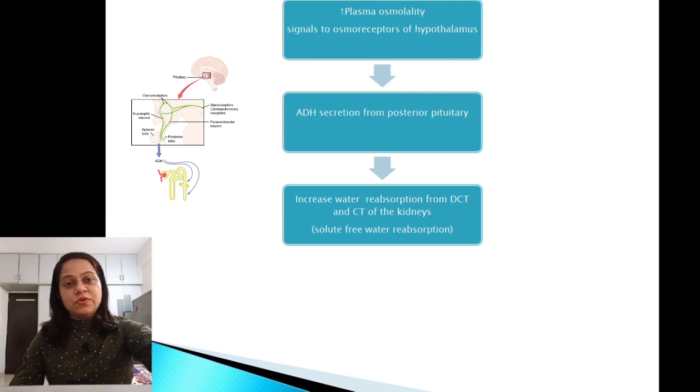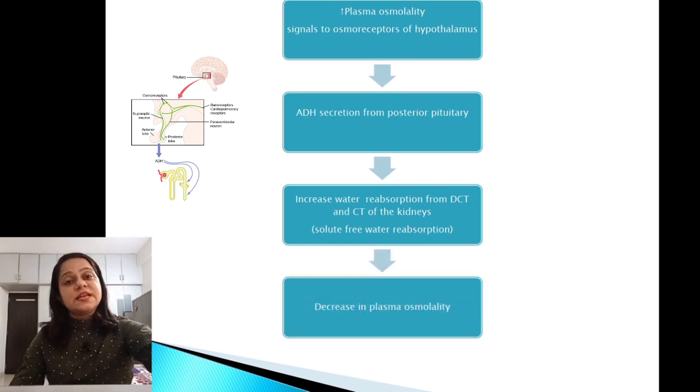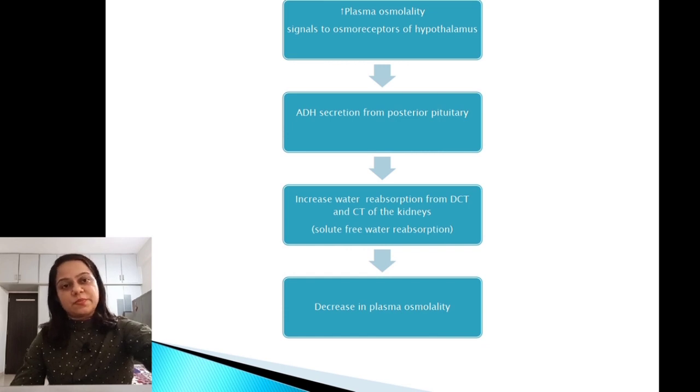Anti-diuretic hormone acts on the kidney. It causes increased water reabsorption from distal convoluted tubules and collecting tubules. This is solute-free water reabsorption, thus it reduces plasma osmolality back to normal.